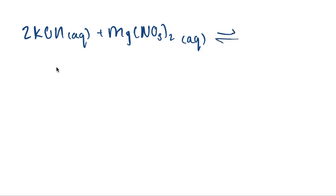Here we're looking at the following equation: 2KOH aqueous plus Mg(NO3)2 aqueous gives us Mg(OH)2 as a solid and 2KNO3 aqueous.